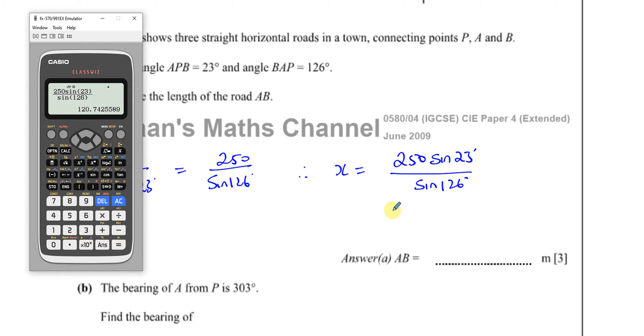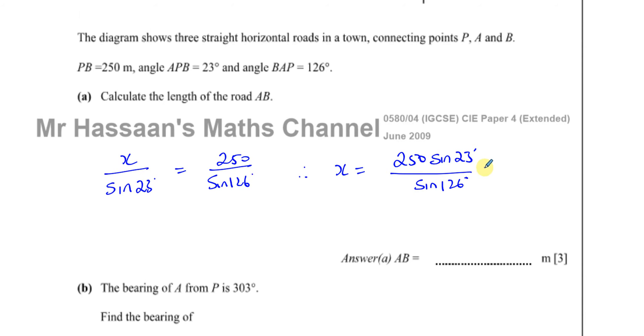That gives me 120.7425. This is a length, so it should be given to three significant figures unless otherwise stated, so this is written as 121 meters.